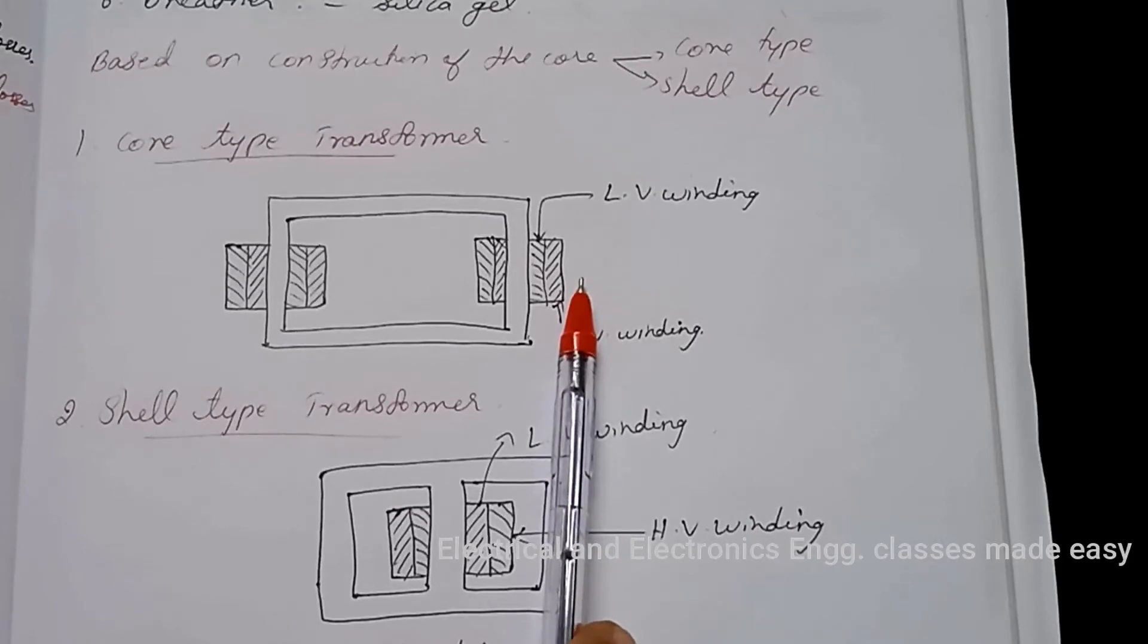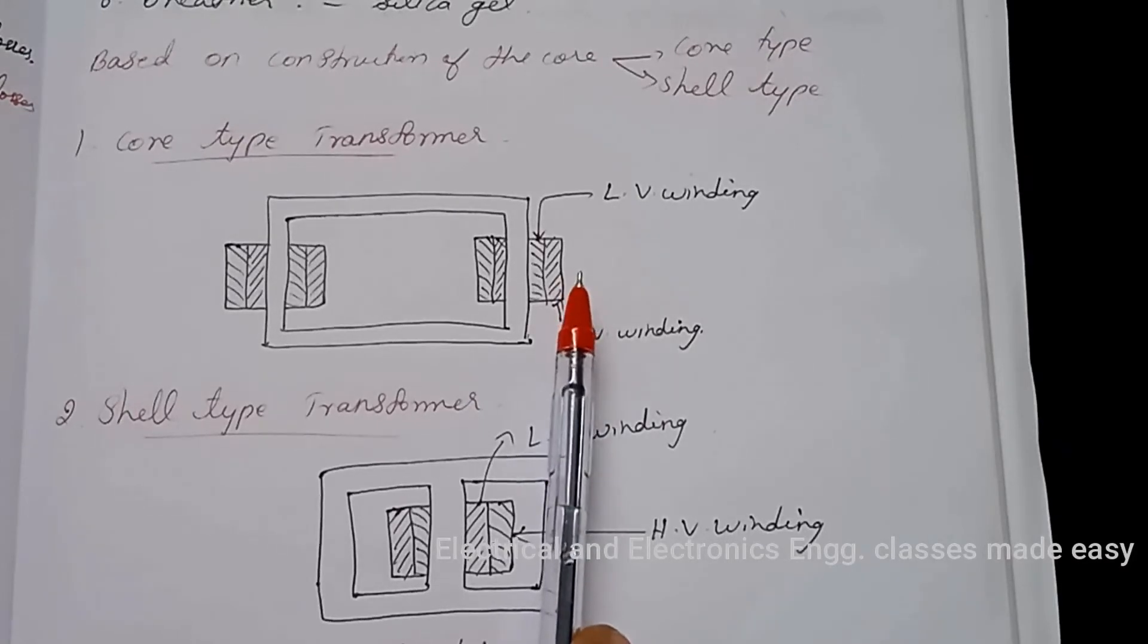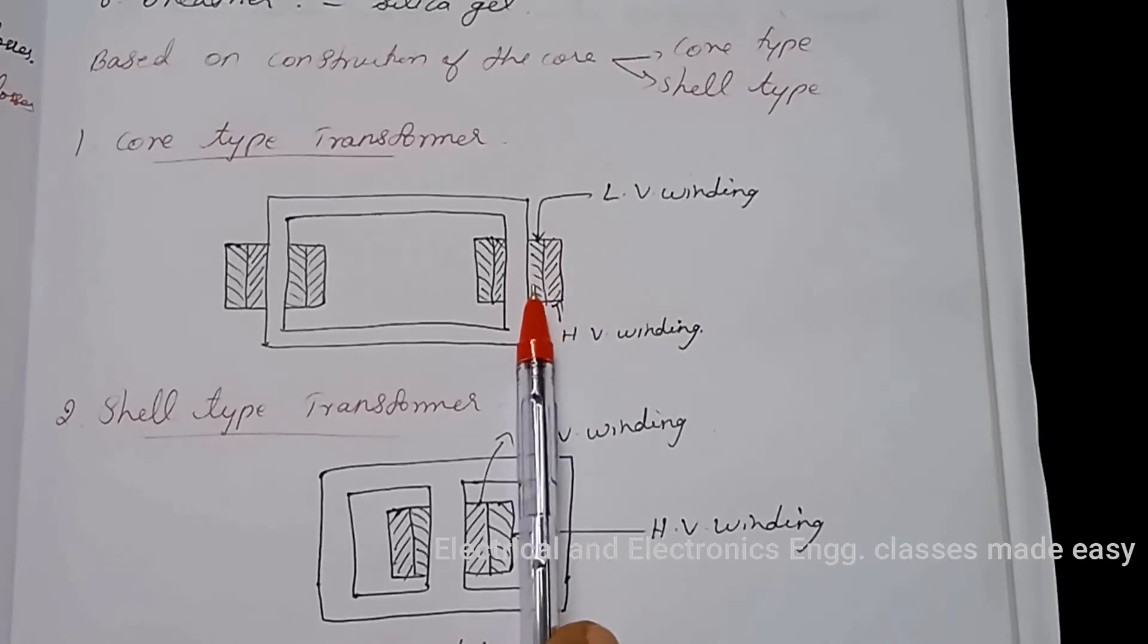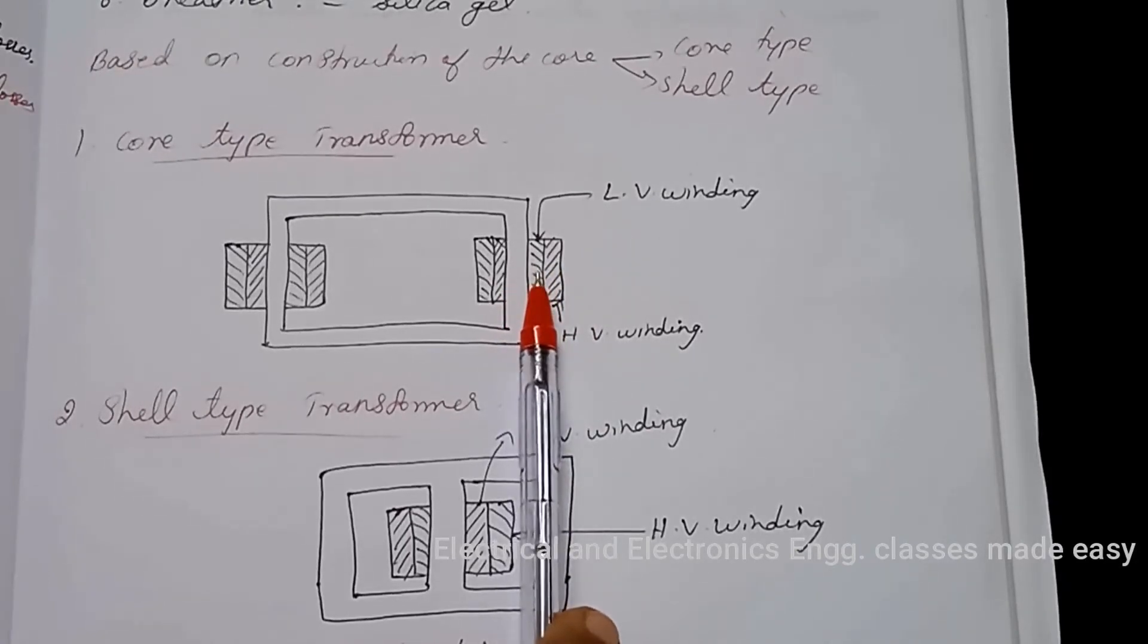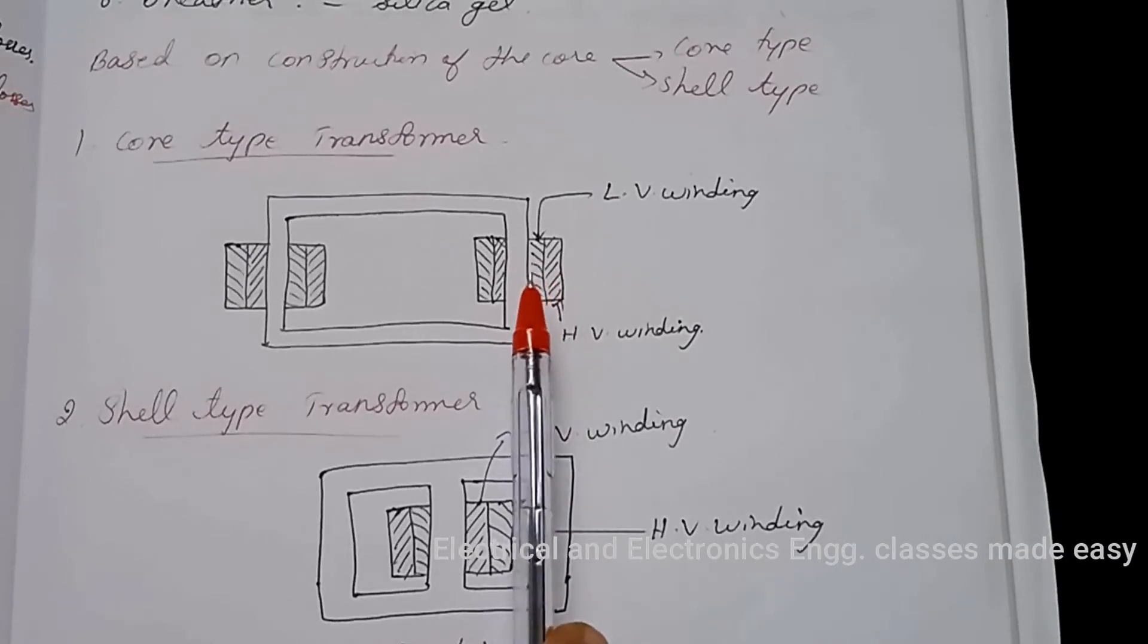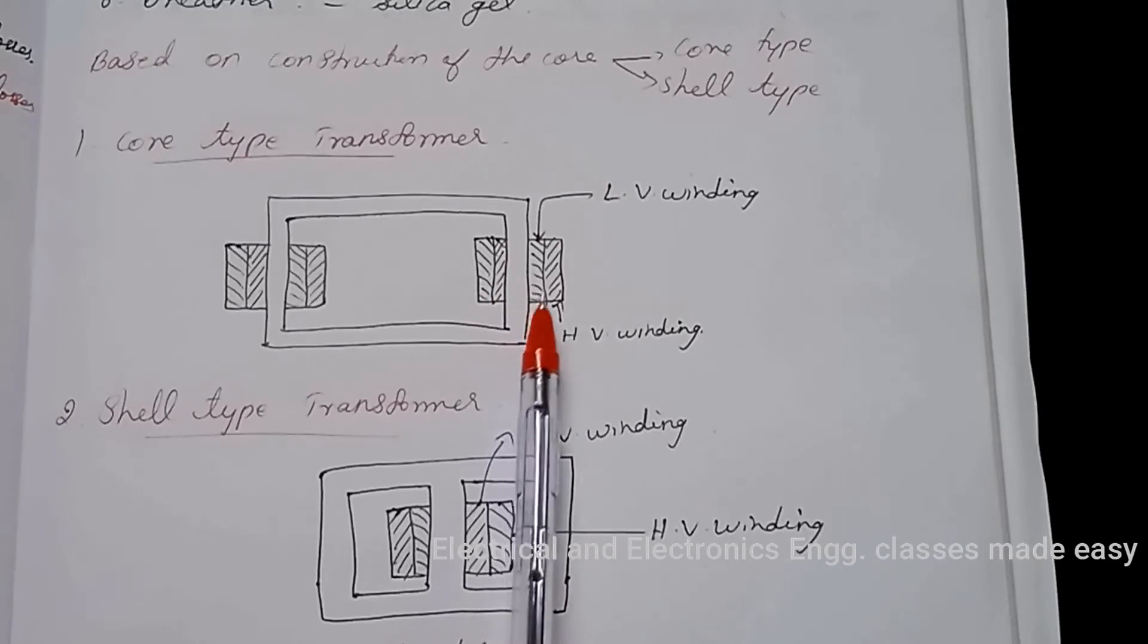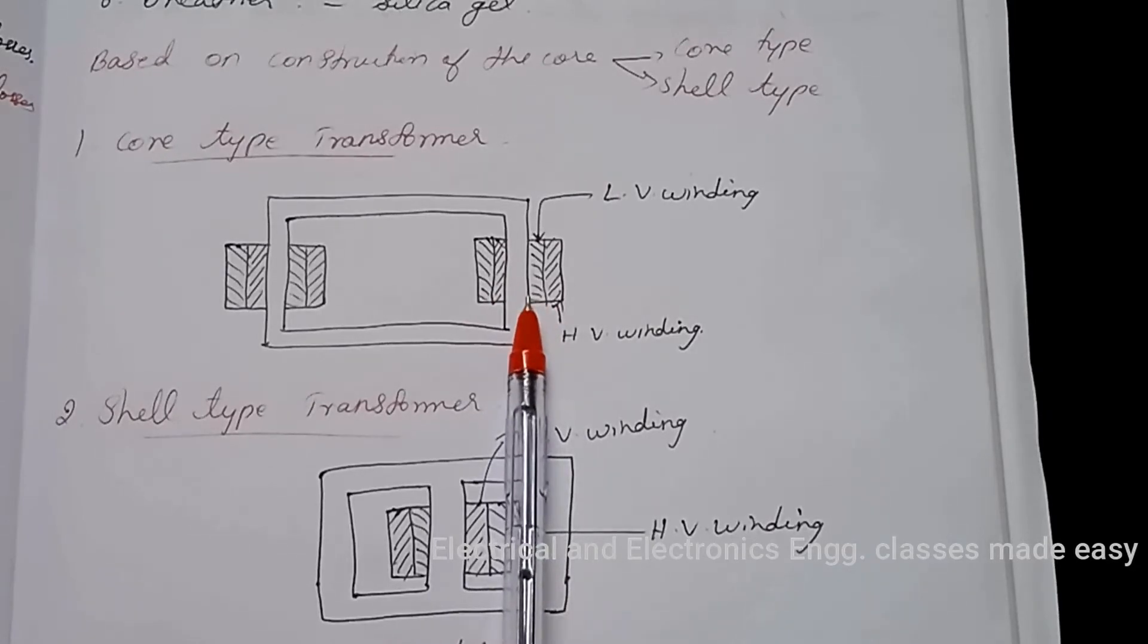Consequently, leakage flux is considerably reduced. While placing these windings, an insulation layer is provided between core and inner winding and between the windings. To reduce the insulation, low voltage winding is usually placed nearer the core.